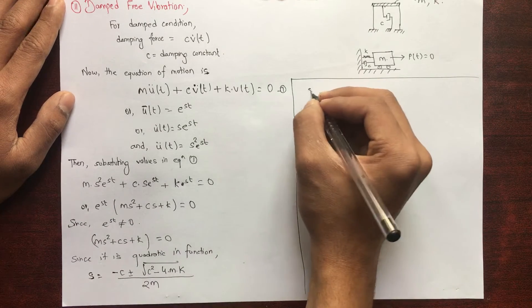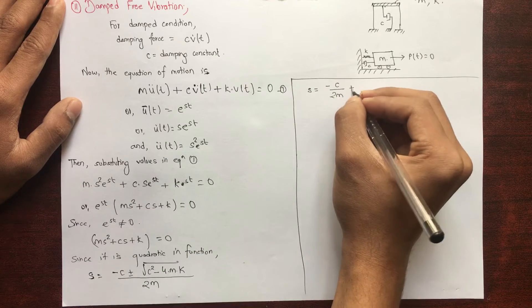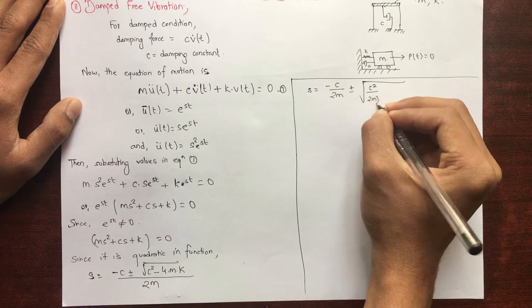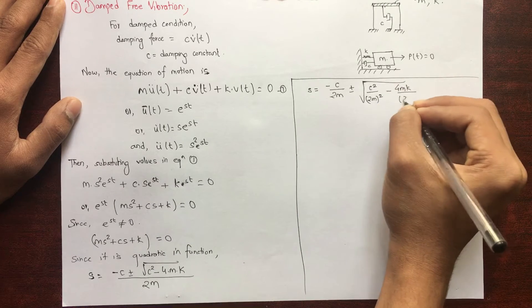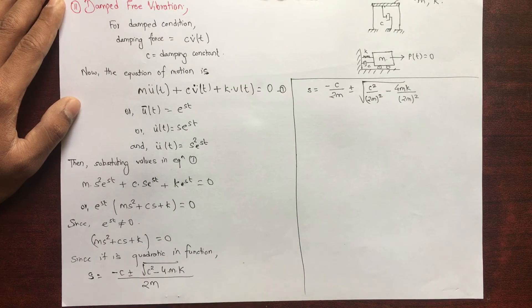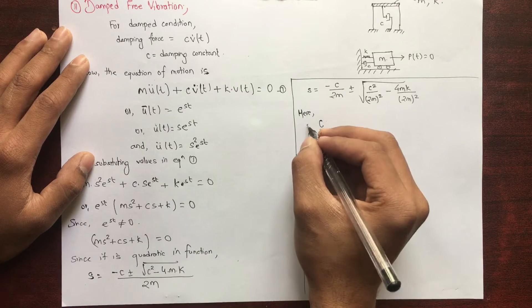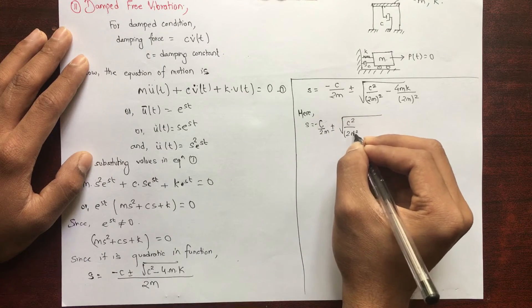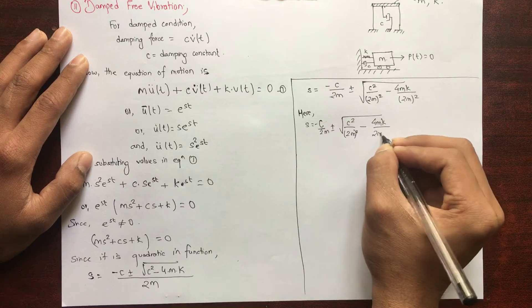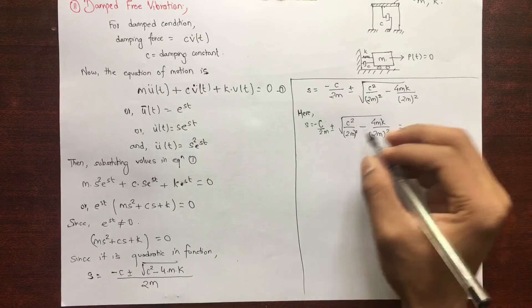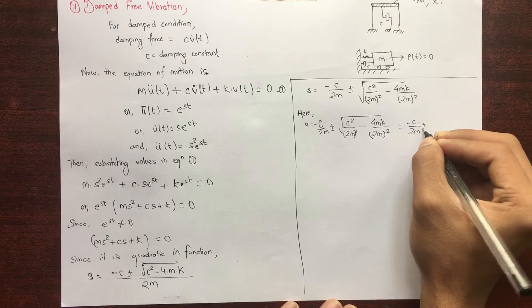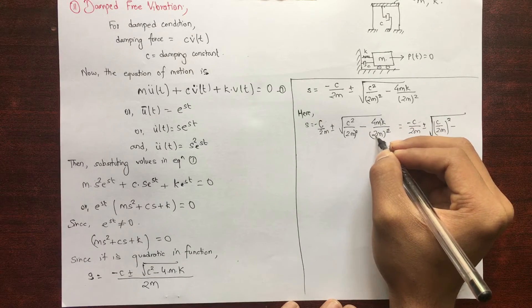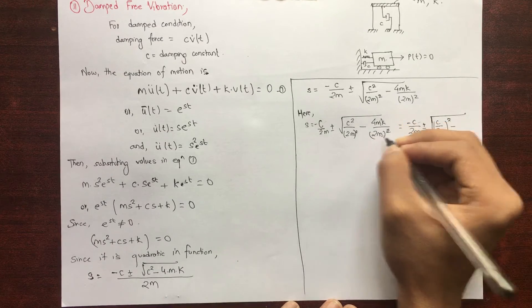Separating out the terms: s = −c/(2m) ± √((c/(2m))² − k/m). Since k/m = ω² (the natural frequency squared), this simplifies to: s = −c/(2m) ± √((c/(2m))² − ω²). The factor of 4m in the numerator and 2m in the denominator cancel to give this clean form.